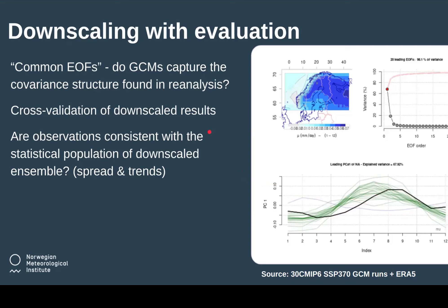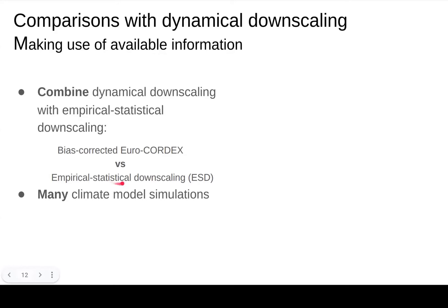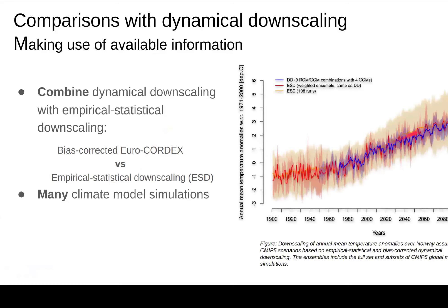We also check whether the observations are consistent with the statistical population of the downscaled ensemble, looking at spread and trends. Towards the end, we want to emphasize that we need to combine statistical downscaling and dynamical downscaling, because they make completely different assumptions but should give the same results. Here we have combined EuroCodeX results with empirical statistical downscaled results in red, using exactly the same models, and we see that they correspond fairly well — so the downscaling works. However, the four GCMs used in EuroCodeX are a very small subset and do not capture the full range of the entire multi-model ensemble. We need many climate model simulations to get a good representation of future outlook.